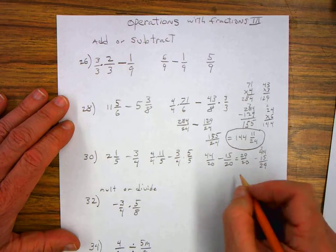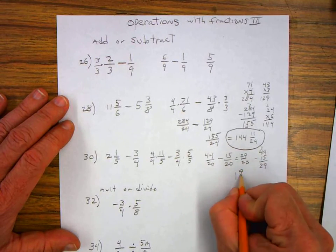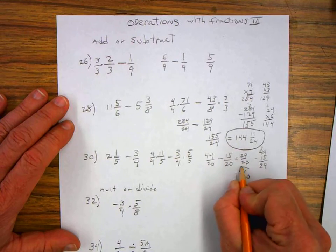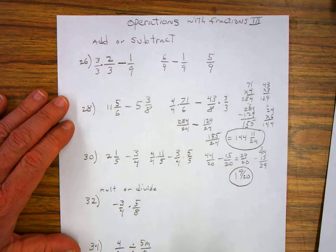I know that twenty goes into twenty-nine at least once and I have nine twentieths left over. And that's my final answer.